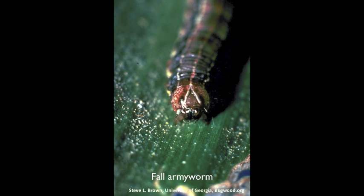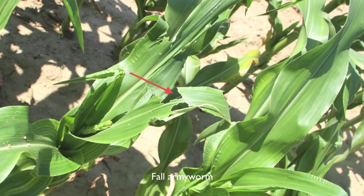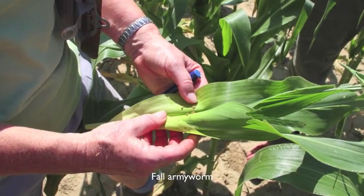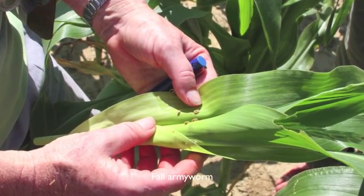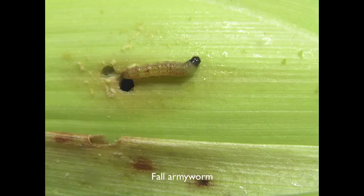Mature larvae are up to one and a half inches in length. Larvae will feed on the leaves resulting in a ragged appearance, and large amounts of frass can often be found below the feeding site. They will also feed on the ear, but usually burrow through the husk to get to the ear, unlike corn earworm that enters through the silk.